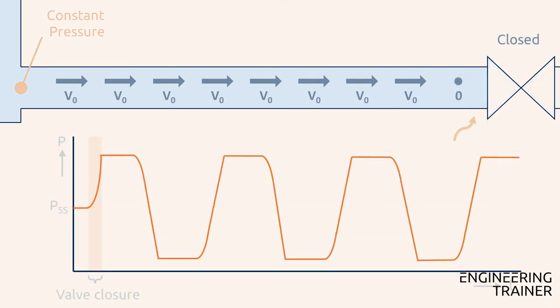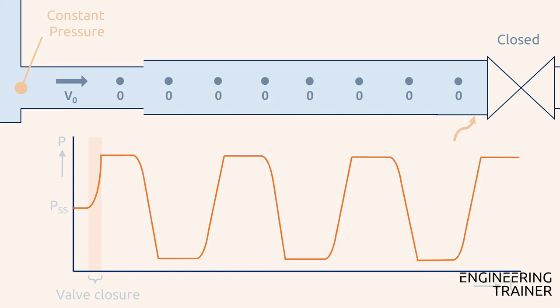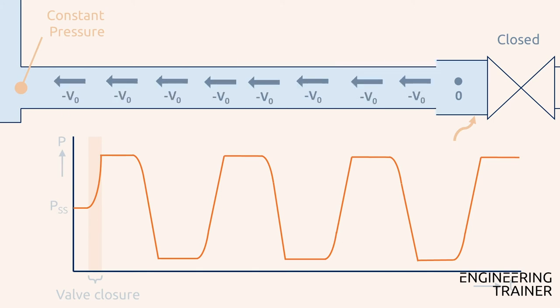Closure of the valve results in pressure peaks as we've seen before, and the associated pressure waves move back and forth between the reservoir and the closed valve. So let's take a closer look at what happens if the friction between the medium and the pipe wall is considered.